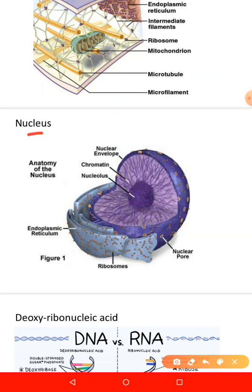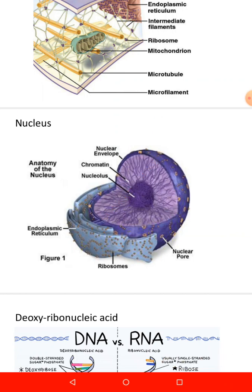The nucleus is the most prominent and largest cellular organelle, with a diameter of about 10 to 22 micrometers, occupying about 10 percent of the total volume of the cell. Most cells have only one nucleus — those are called uninucleated cells — but others have many nuclei, called multinucleated cells.